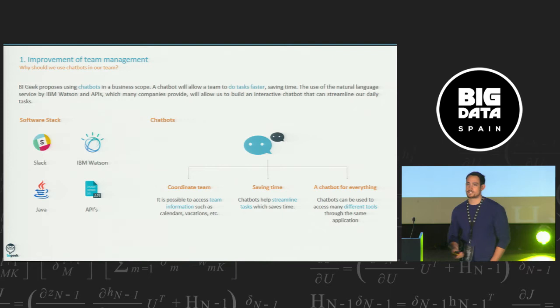IBM Watson, I'm going to talk later more deeply, but basically, it can answer questions in natural language. So, it's really good for this approach. We also use APIs, that is the way to interact with the different software that we have in the company, and Java for everything, to build the application.